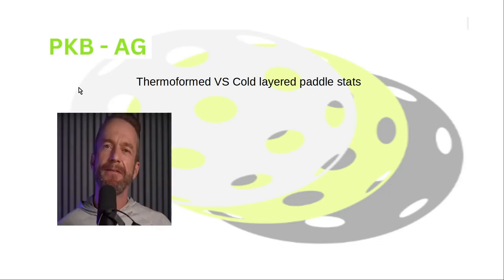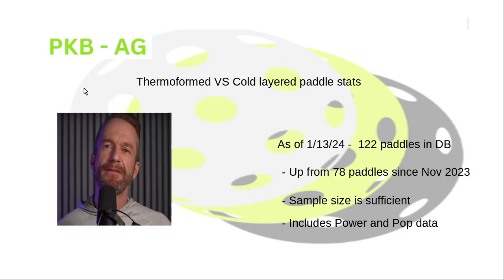Today we're gonna look at some differences between thermoformed processing and cold layer processing for paddles. We're gonna use John Q's numbers. As of 113, his database went up to 122. It was 78 back in November, so he's done quite a bit of work adding to his database. Sample size is sufficient and includes power and pop in miles per hour, which is why I like to use his versus other reviewers' databases.